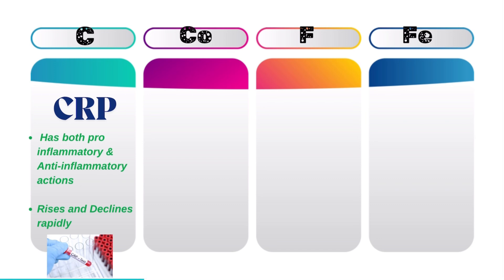C is for C-reactive protein, CRP. CRP has both pro-inflammatory and anti-inflammatory effects. It rises and drops quickly, so daily monitoring can be helpful to gauge the effect of treatment.